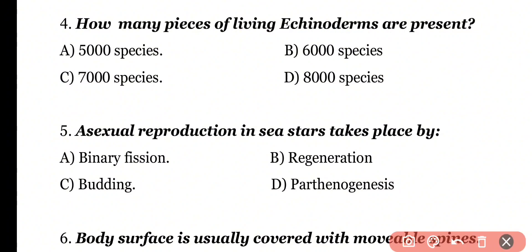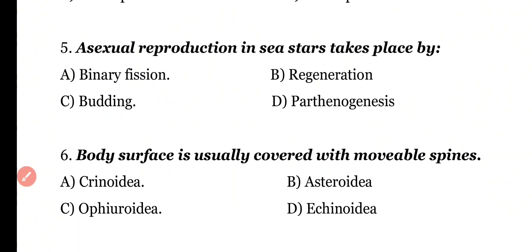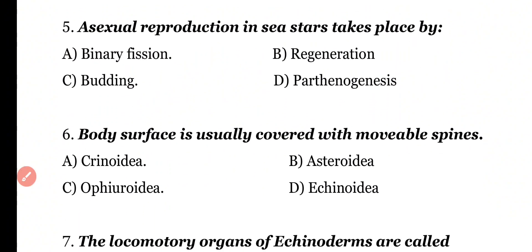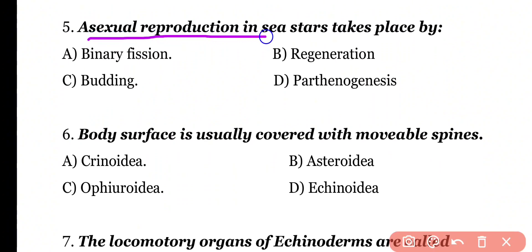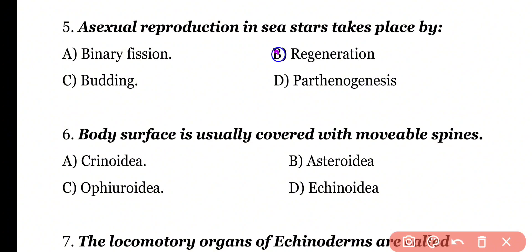Question 5: Asexual reproduction in the sea star takes place by fission, regeneration, budding, or parthenogenesis? Correct answer is Option B — regeneration.